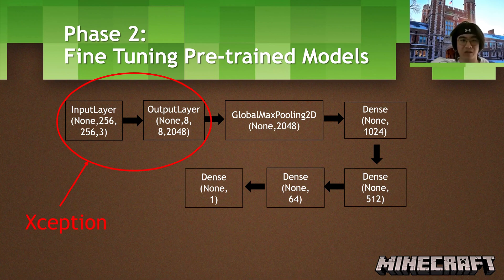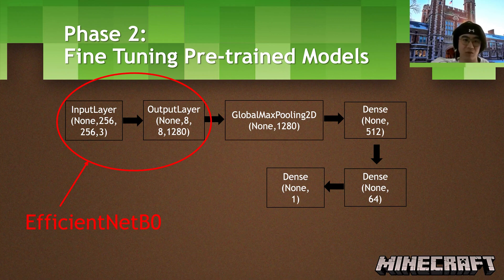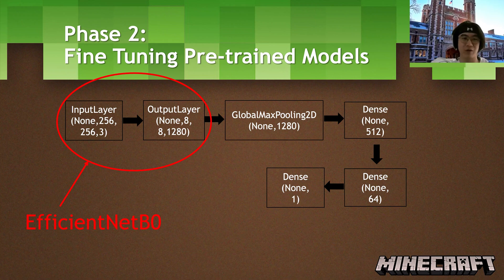The next pre-trained model I use is Xception. The structure is almost the same as the previous model, except the base model part is switched to Xception. For the third pre-trained model, EfficientNet B0, the structure is a bit different because the output shape is smaller than the previous two models, so I only use three dense layers as the final layers. I tried random weight initialization but it gave very bad results. Unfreezing all layers of the pre-trained model to be trainable gave better results.